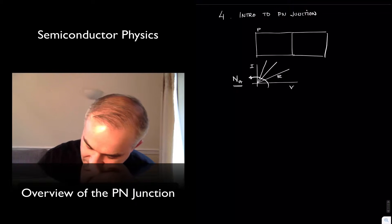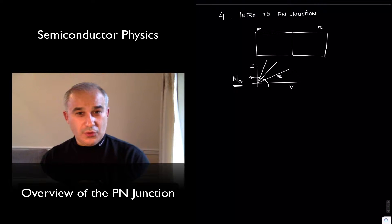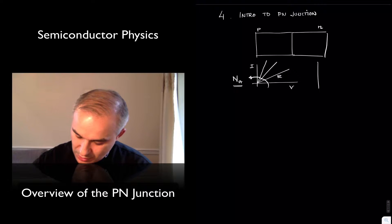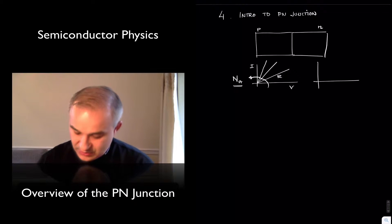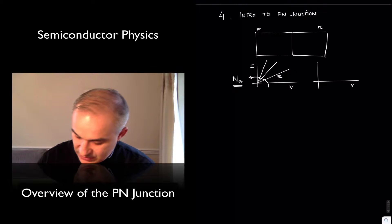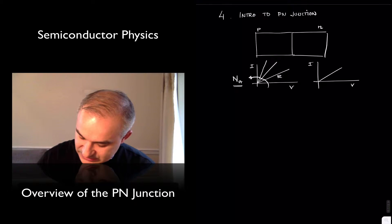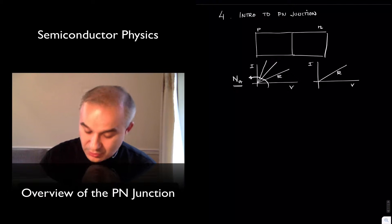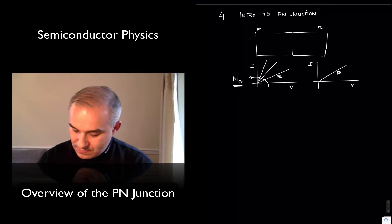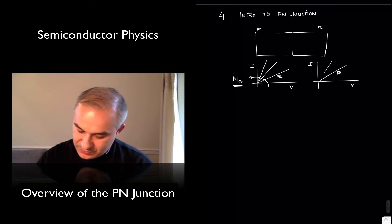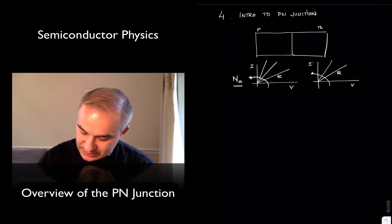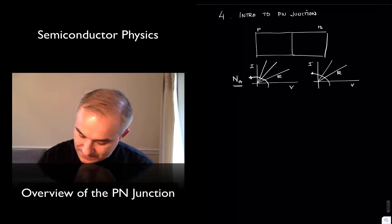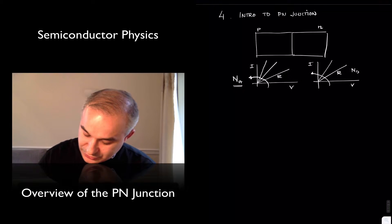Similarly, for N-type, if you dope the material with Group V atoms, you get something very similar. The current-voltage characteristics are similar to a resistor whose conductivity for the material is going to be dependent, and you can make it a better conductor by increasing the doping concentration.